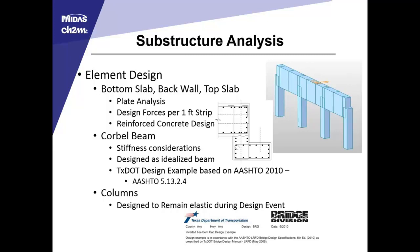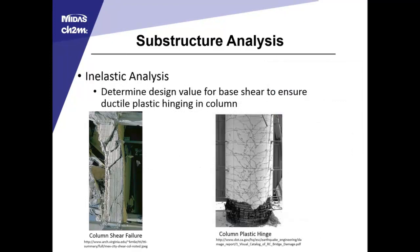For the columns, they were designed to remain elastic during the design event, and then detailed for the inelastic region, which would be expected at events exceeding the design event. Moving into the inelastic analysis, the purpose is to force a plastic moment failure before a shear failure. The image on the left shows a shear failure, which is undesirable and almost certainly ends in superstructure collapse. On the right we have a column plastic hinge — while that column likely has no shear capacity left, it's still stable and able to support the superstructure above. The purpose of the analysis is to determine the defined value for the shear to ensure that reaction.